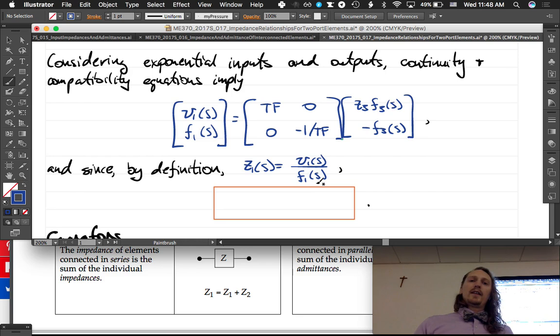Then we are going to get this expression: z1 of s equals tf squared times z3. That is a really horrible three.